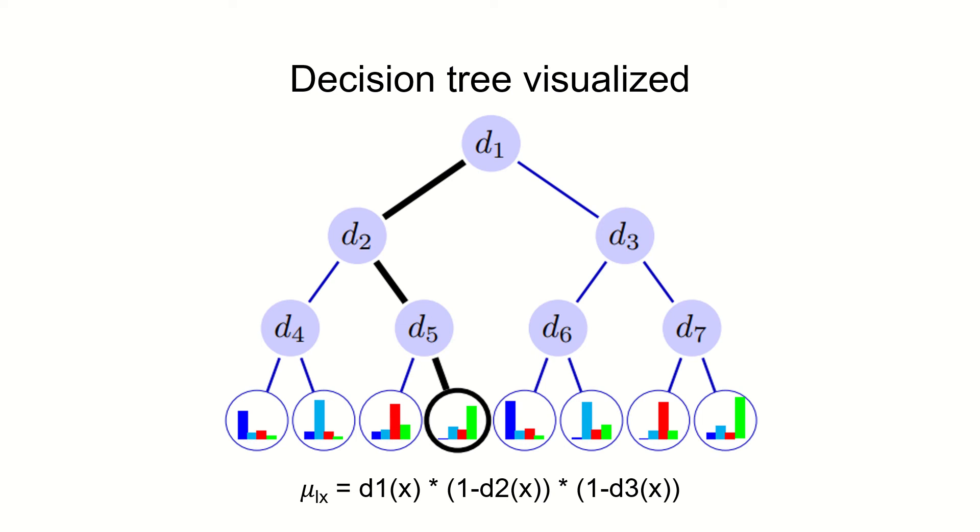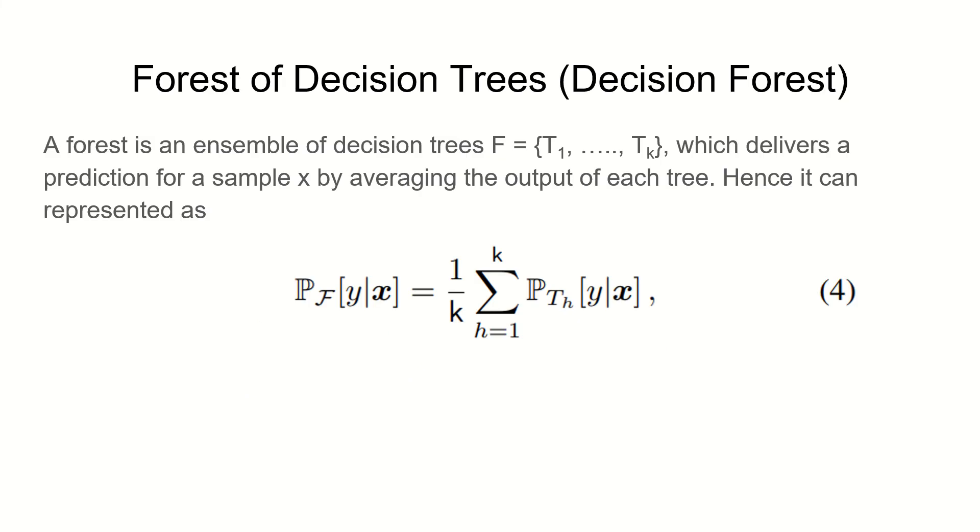With this example we can say mu_L(X) is equal to D1(X) because it went left, multiplied by 1 minus D2(X) because it went right, and then multiplied by 1 minus D5(X) because it went right again.